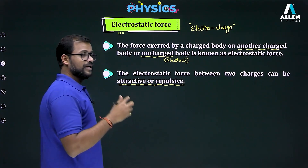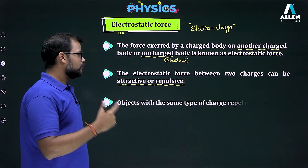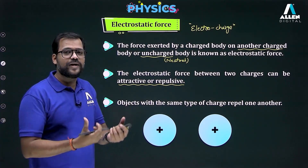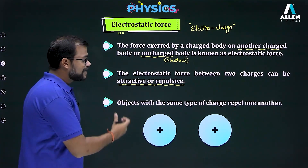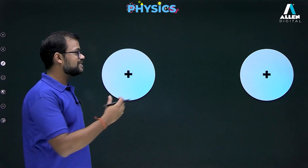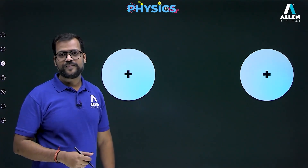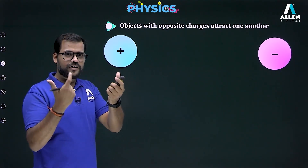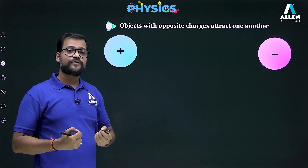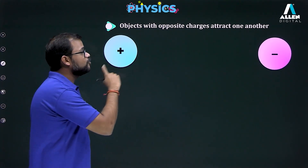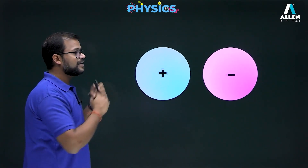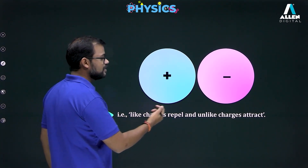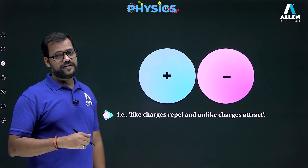The electric force between two charges can be attractive or repulsive depending on polarity. Like (same) charges placed together repel each other, while oppositely charged objects attract each other. We conclude: like charges repel and unlike charges attract each other.